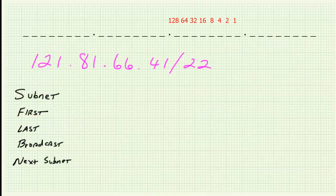So let's take a look at what we're given. You can see on the whiteboard that we are given an IP address of 121.81.66.41 expressed in CIDR notation. It's a slash 22, which means we have a network prefix of 22 bits. In other words, the first 22 bits represent the network portion of this IP address and the last 10 bits represent the host portion.